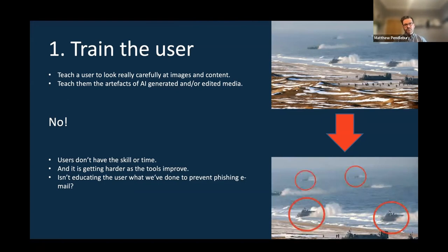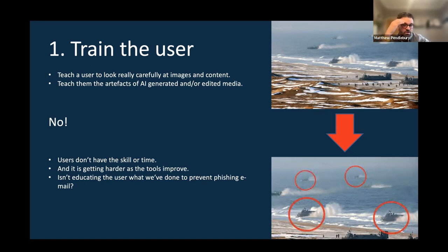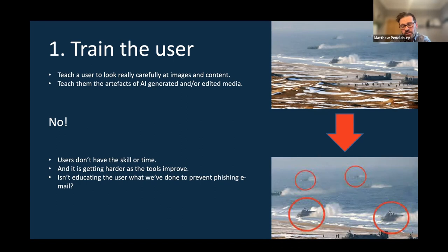Let's look at different approaches to solve this problem. The first is: train the user. The top picture on the right is a press release by the Democratic People's Republic of North Korea. They had a military hovercraft landing exercise and shot publicity photos. These were later examined and they had Photoshopped in some extra hovercraft to make their army look bigger and more impressive. This was done in 2013 — ten years ago — and even with the big red circles, I wouldn't have spotted it. Technology is whipping along at such a pace. Can we train users to detect this stuff?